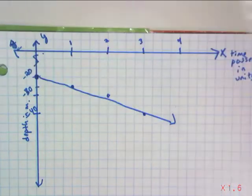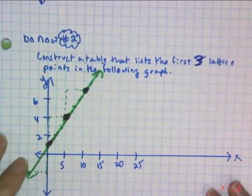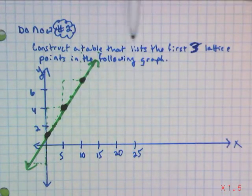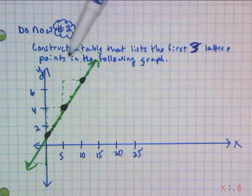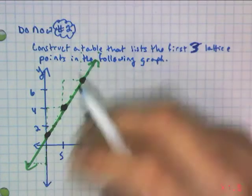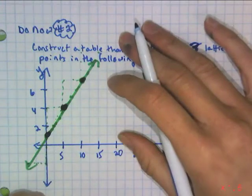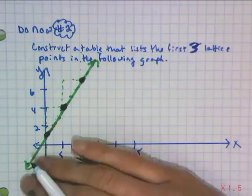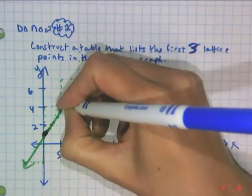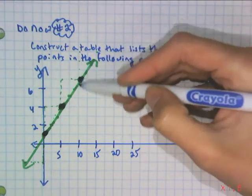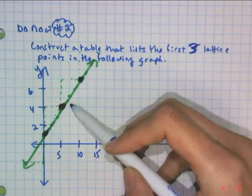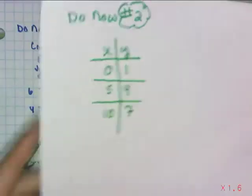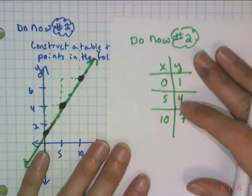The last thing that we're going to do today is I would like you to take a look at do now number 2. You see a graph that I would like you to construct a table for that lists the first three lattice points in this following graph. So this graph is a line. It continues forever in both directions, which means it consists of an infinite amount of points within it. But I have emphasized where those points are on a lattice point. So you're looking at this one, this one, and this one. After you've done that, we'll discuss.